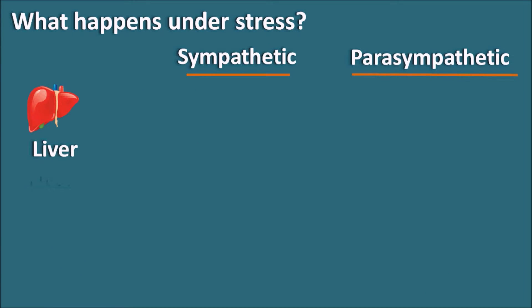Next, what happens to the liver? The liver is responsible for producing glucose from non-carbohydrate sources. The sympathetic system stimulates metabolic pathways in the liver to increase glucose production. Interestingly, the parasympathetic system has no effect here — otherwise glucose levels would fall under restful conditions. So at the liver, only the sympathetic system works to increase glucose production.